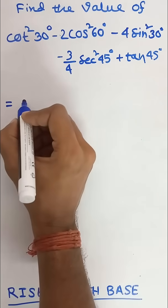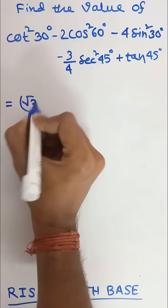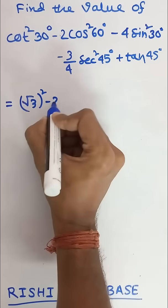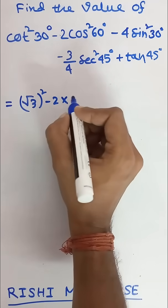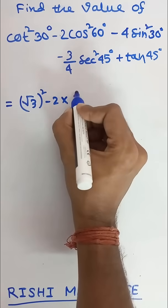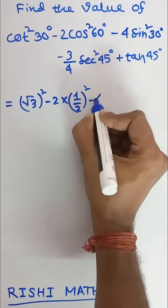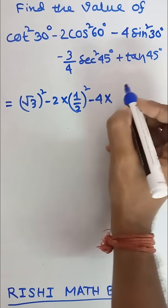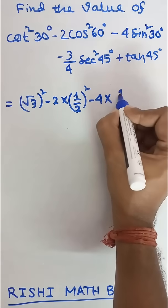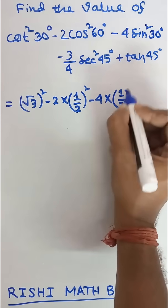The value of cot square 30 degree is root 3 whole square minus 2 into the value of cos square 60 degree is 1 by 2 whole square minus 4 into the value of sin square 30 degree is 1 by 2 whole square.